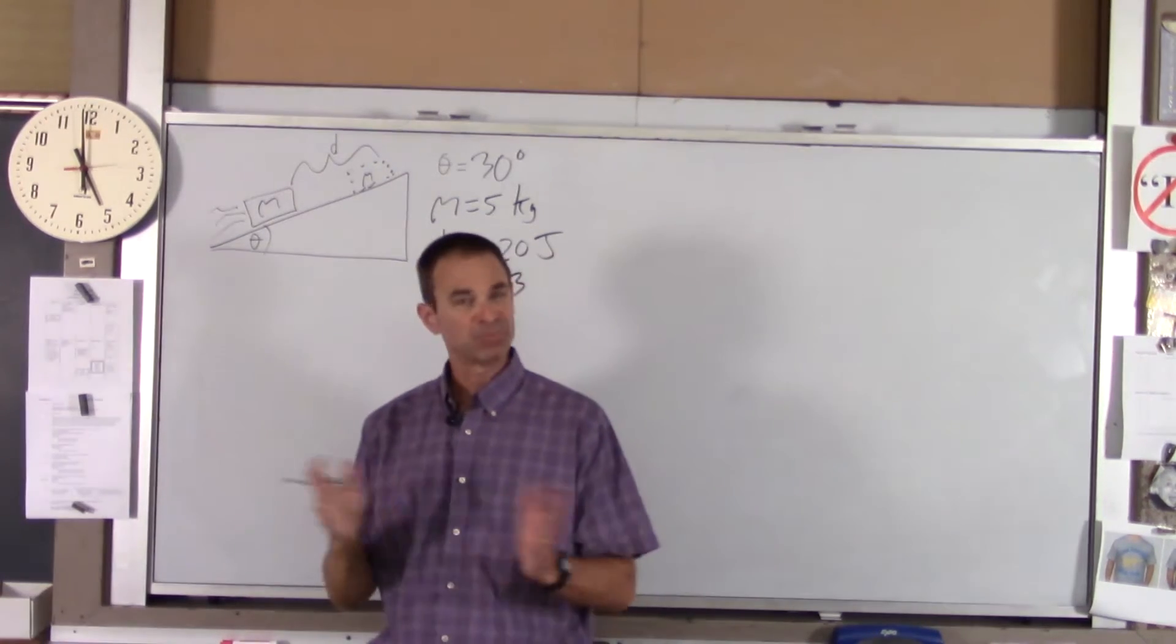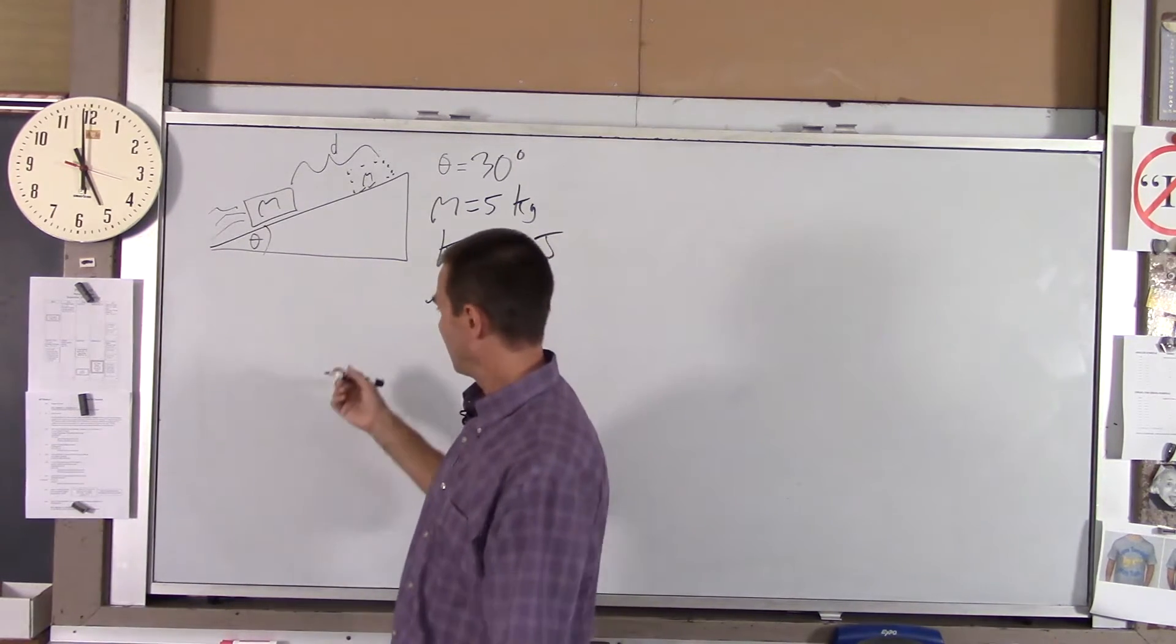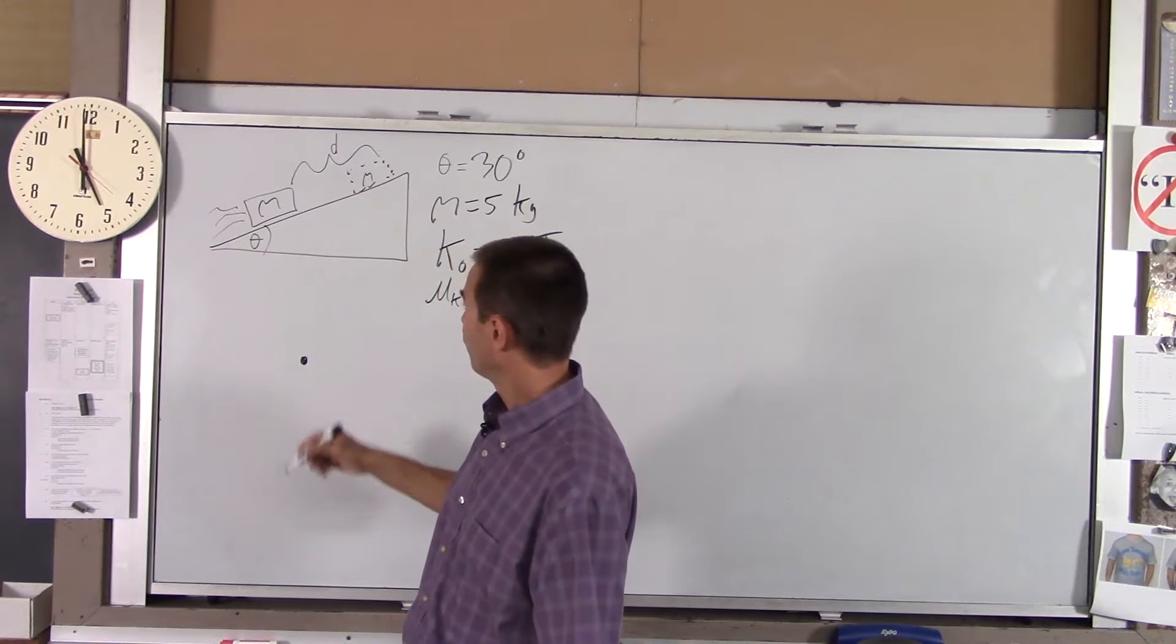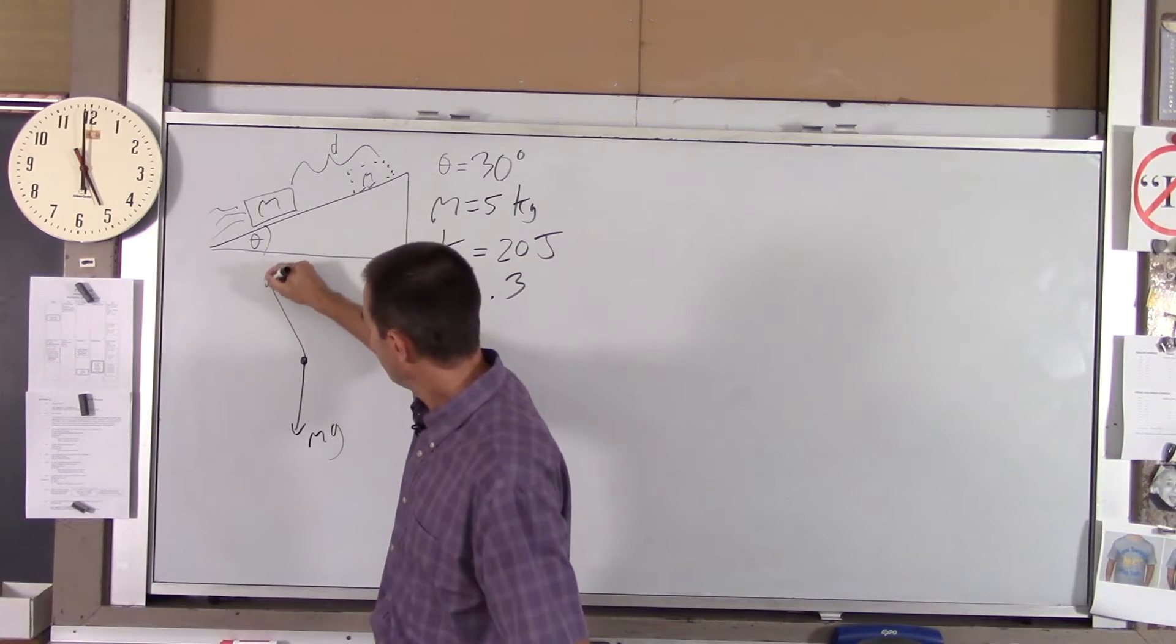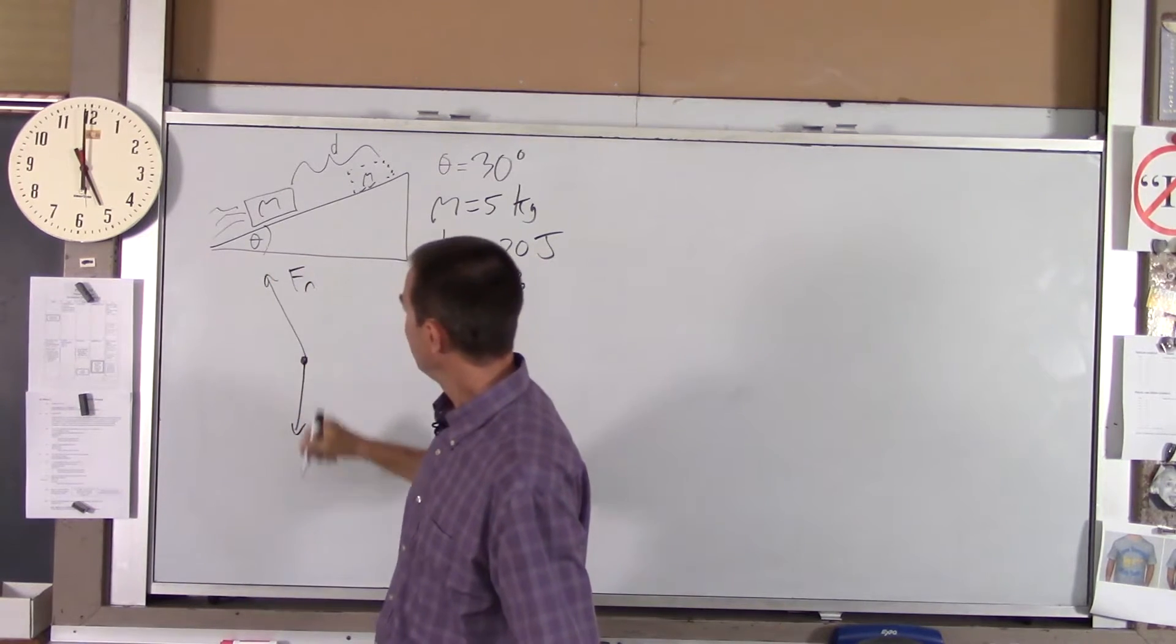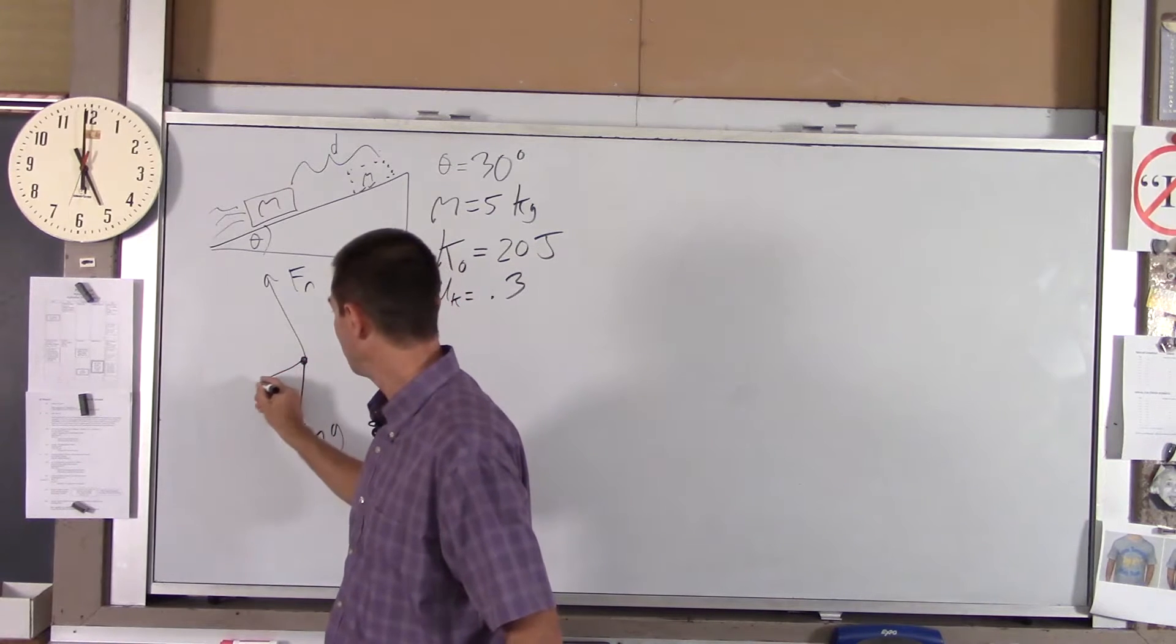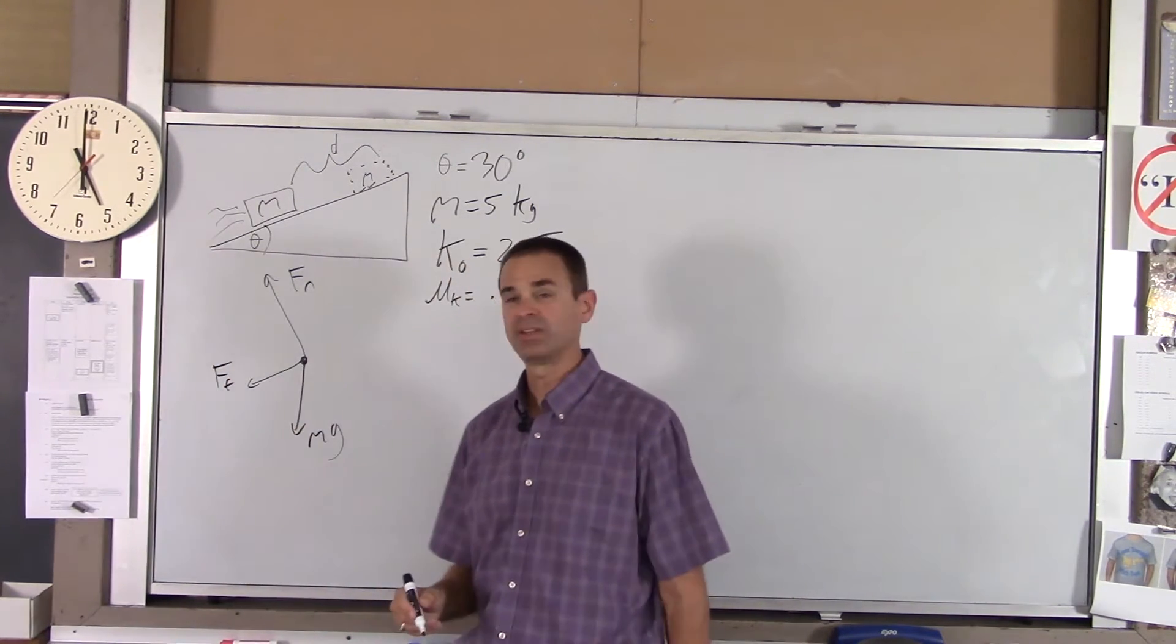Like any problem with multiple forces, we're going to draw an FBD. We're going to actually draw two of them. So here's our college board FBD. The forces acting on the block are gravity, normal, and then it's sliding up the hill and there's friction. So friction's opposing that relative motion. There you go, force of friction kinetic.